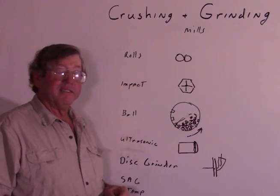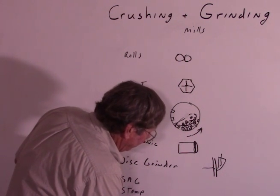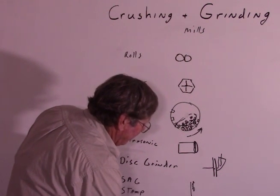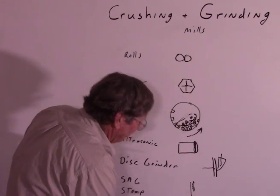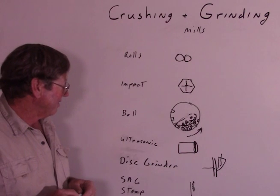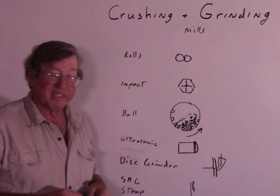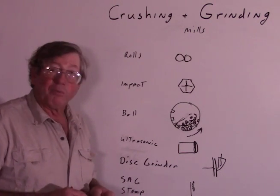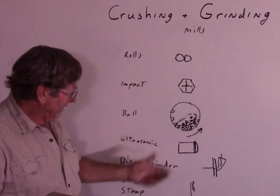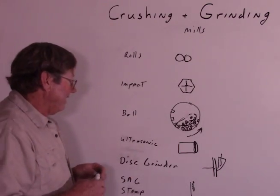Stamp mills used to be used in the old days — basically just a heavy chunk of steel that would be picked up and dropped, and your material would flow underneath it. They pretty much went out of style a long time ago, presumably because they weren't nearly as efficient as other things. All I know is they did work in their day. Somebody might create one using an electric demolition hammer to make a very small stamp mill — it's an idea.